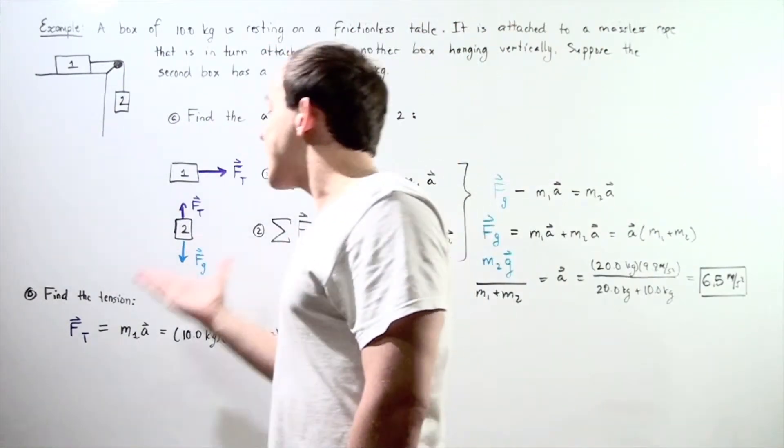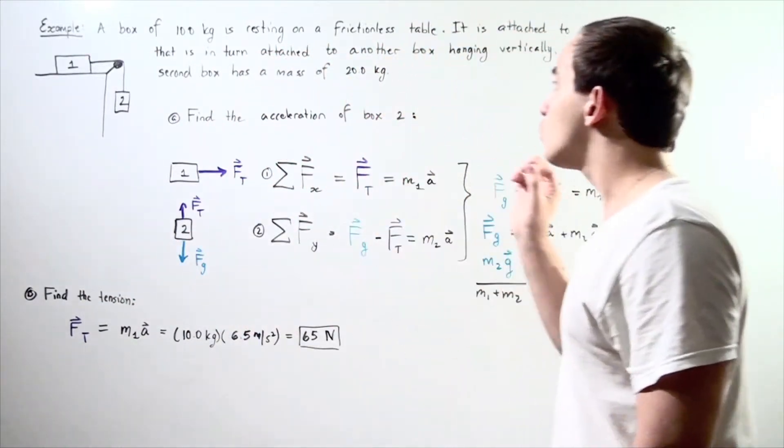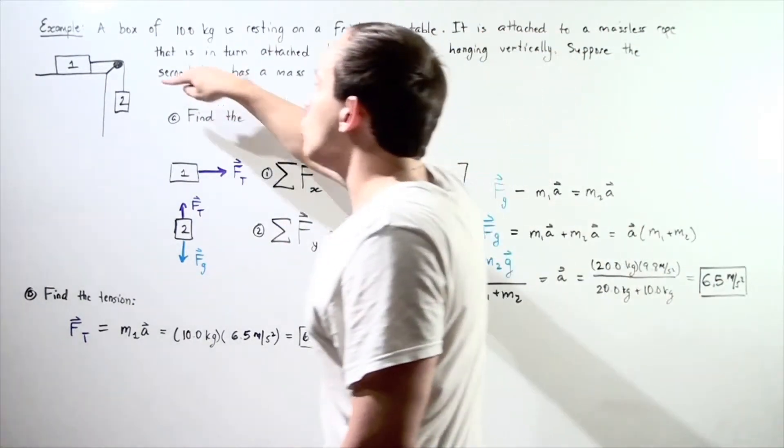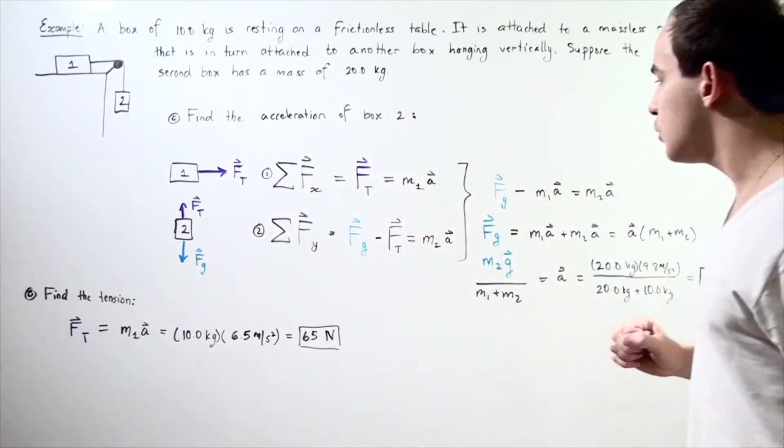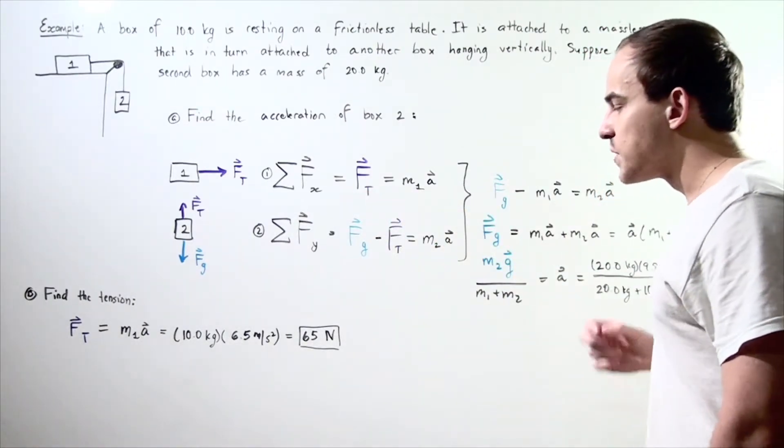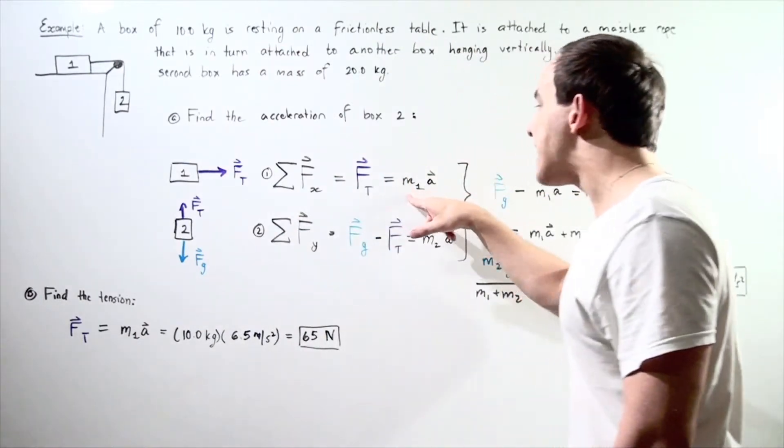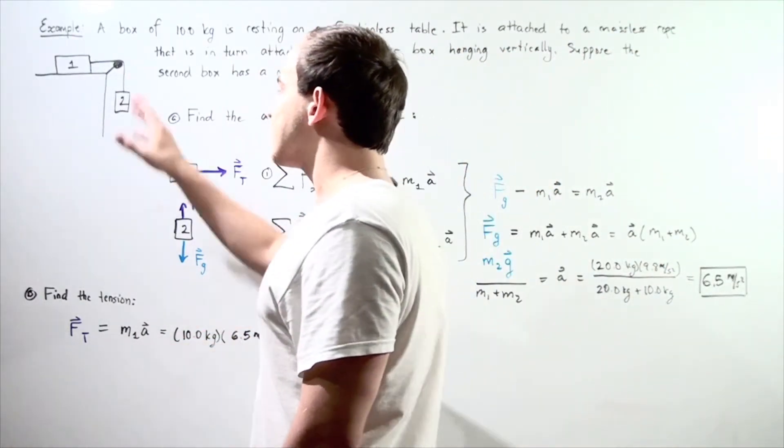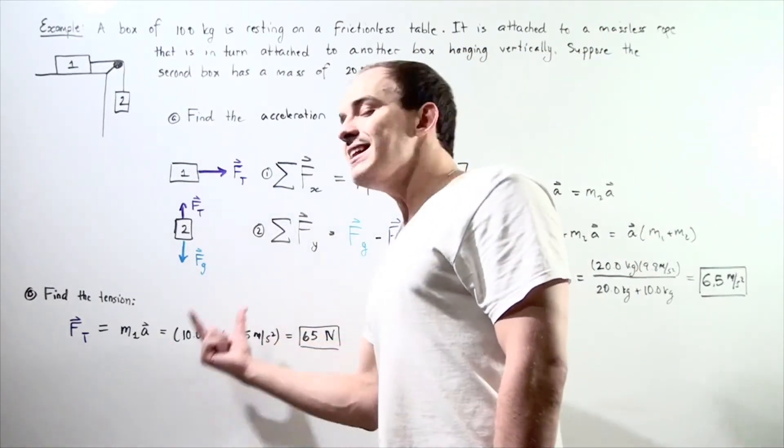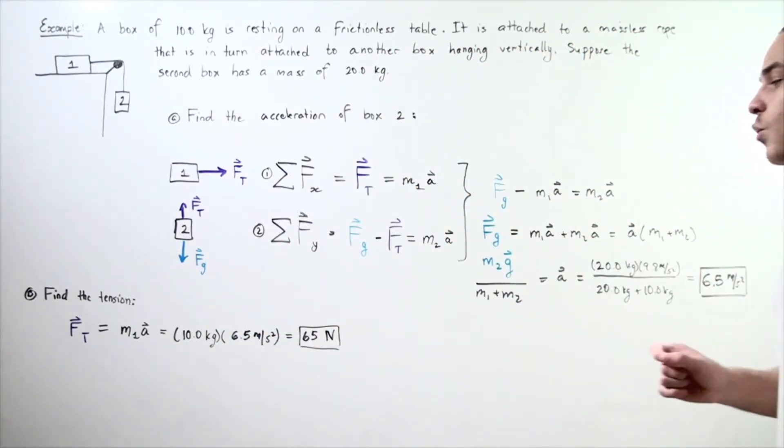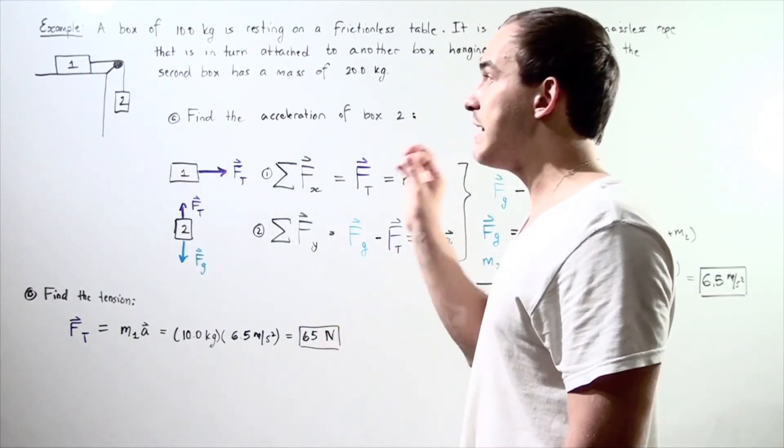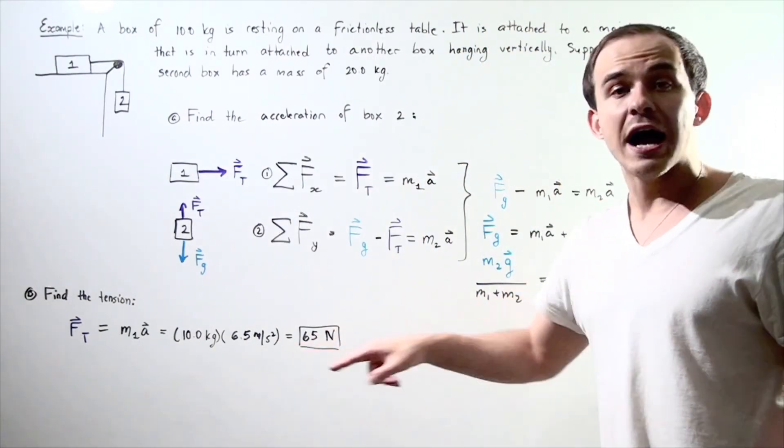Now let's find the tension in the rope. Recall that the rope is massless and flexible, meaning the tension is the same at any point. Using the equation for box one, F_T = m₁a. We know m₁ = 10 kg and a = 6.5 m/s². Therefore, F_T = 10 kg × 6.5 m/s² ≈ 65 newtons. The tension in the rope is 65 newtons.